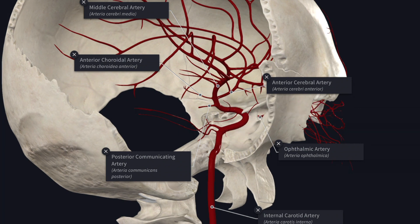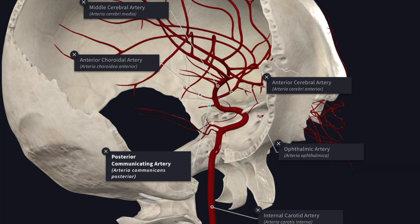Next we'll see the branches of the cerebral part of the internal carotid artery. The first branch is the ophthalmic artery. The ophthalmic artery arises from the ventral convexity of the carotid siphon and enters the optic canal to reach the orbital cavity to supply the structures of the orbit including the eyeball.